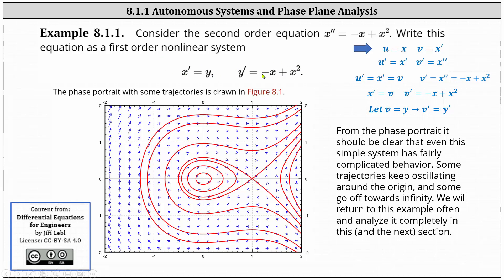Let's first talk about where this came from. In general, to write a second order equation as a first order system, we begin with u = x and v = x'. From here, u' = x' and v' = x''.